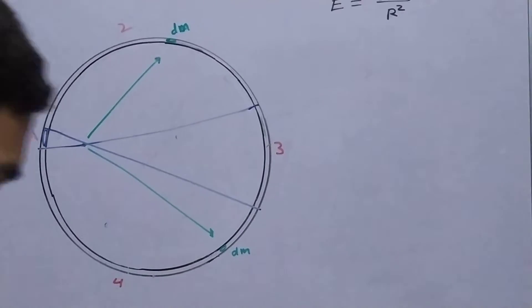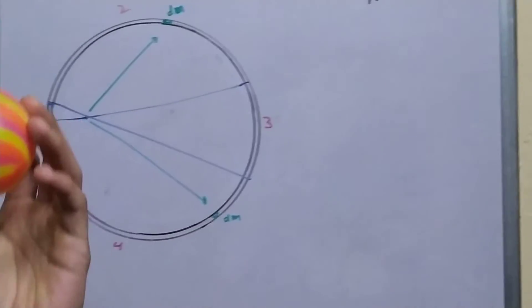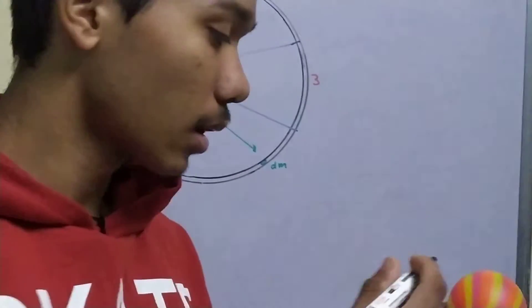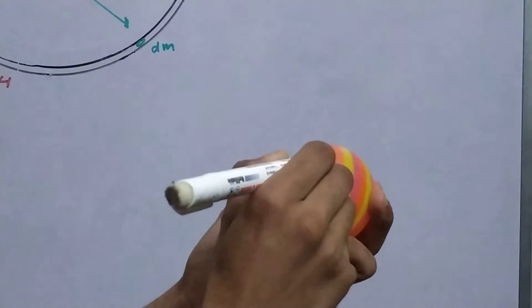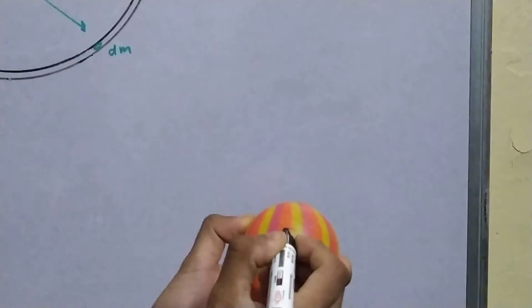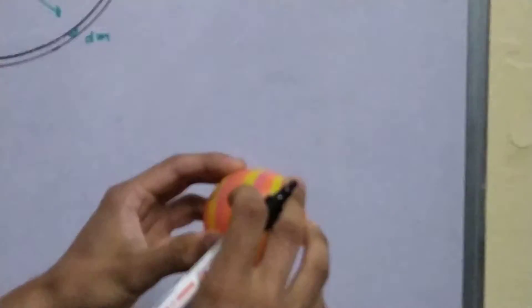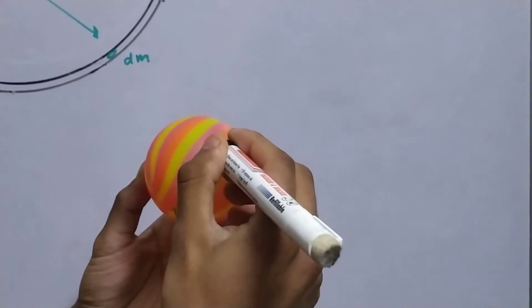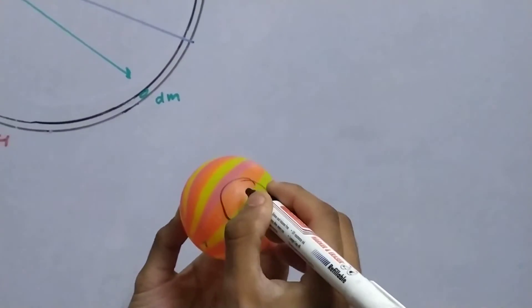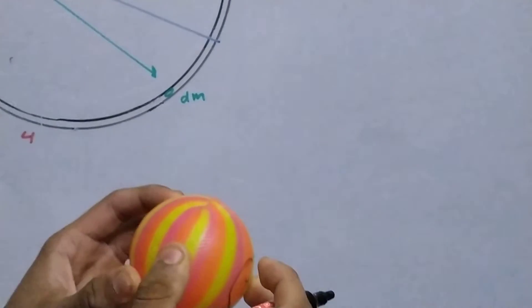If you want to draw it on this ball, then it would look something like this. This is your first region, region number one. And diametrically opposite to it, you have this big region, region four.